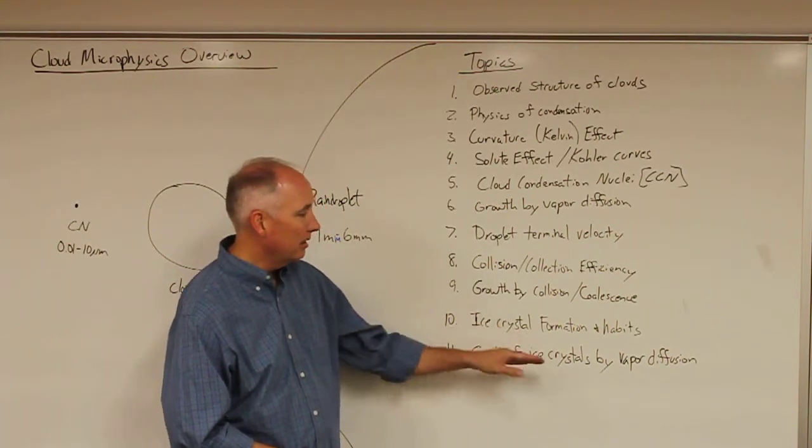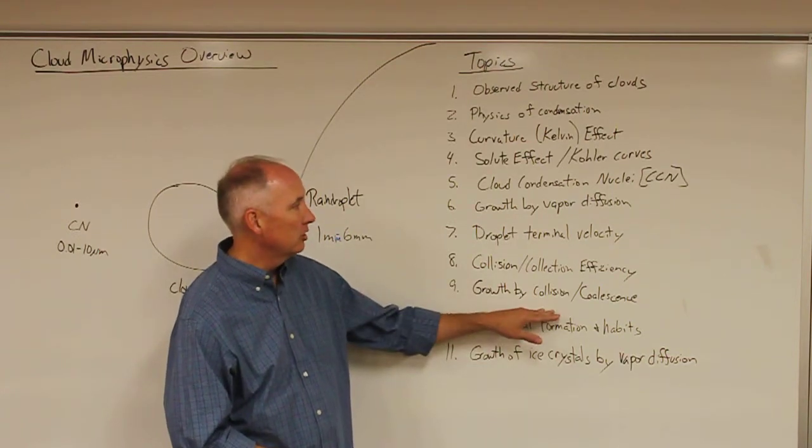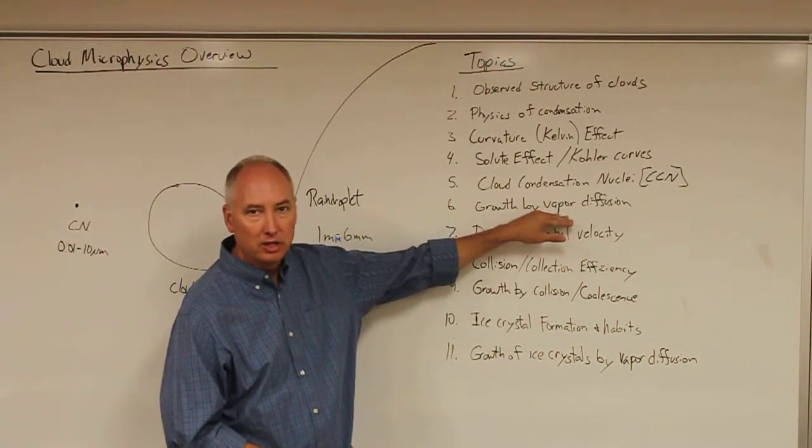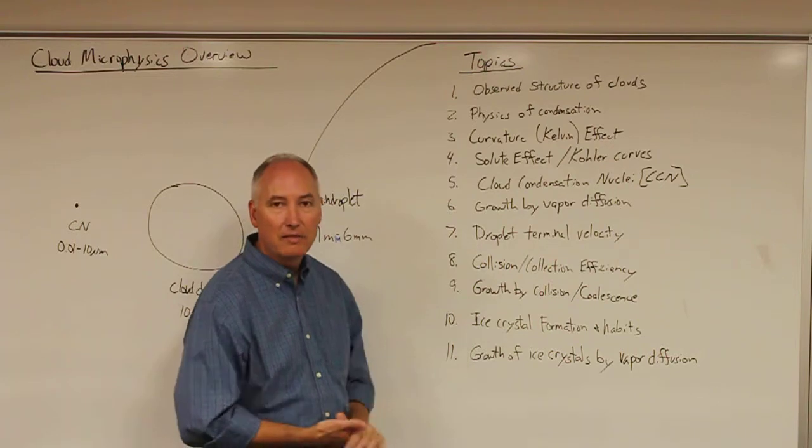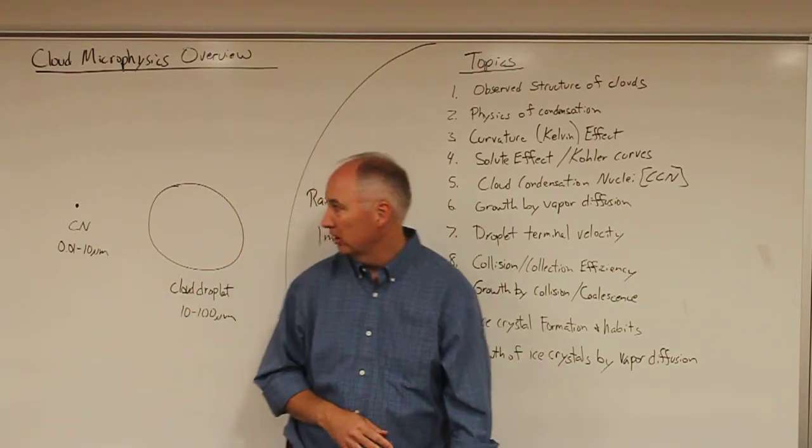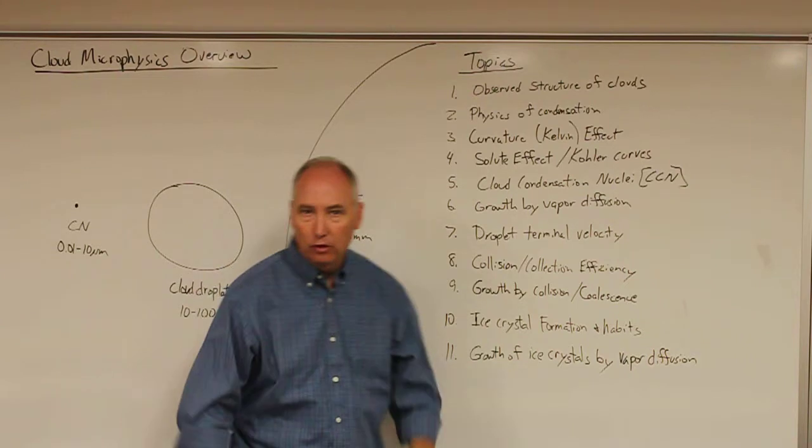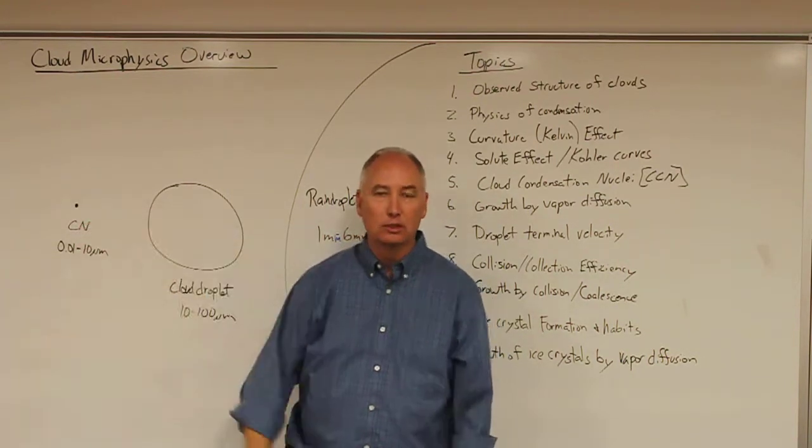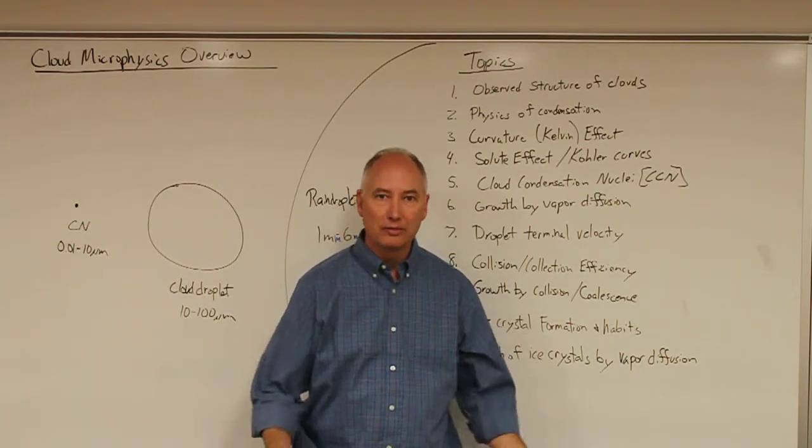At that point, we can start to look at the relative growth rate by ice crystal mechanism, by collision coalescence, and by vapor diffusion. You'll have a pretty good idea at that point about how we can actually grow a rain droplet from particles in a relatively short period of time, in the order of an hour or so.